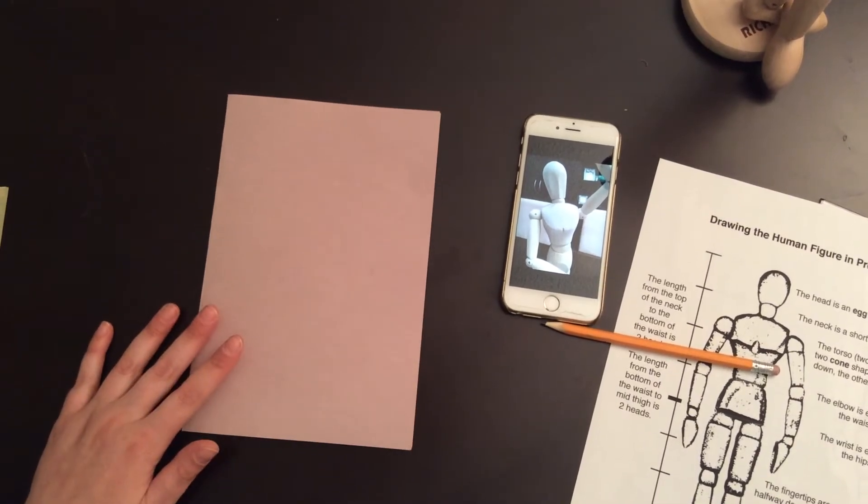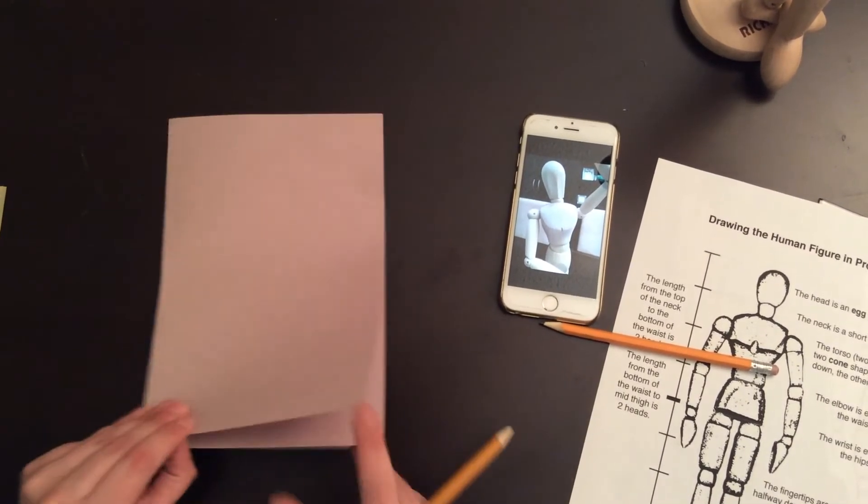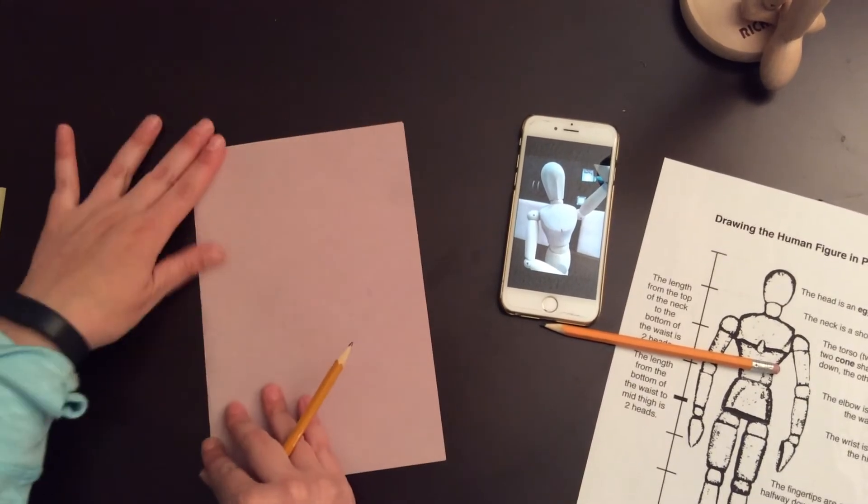Alright, so I'm ready with my good copy paper. I'm going to transfer my image onto this paper. This paper is half of a regular sheet of construction paper.